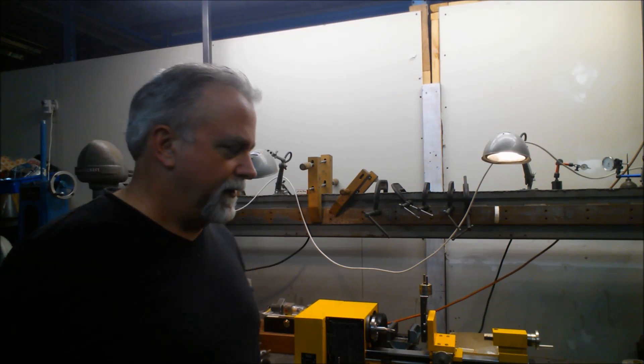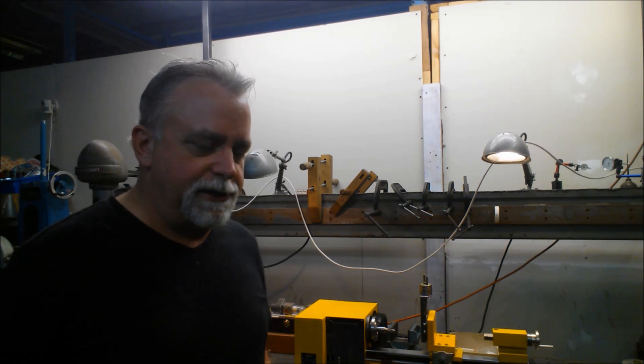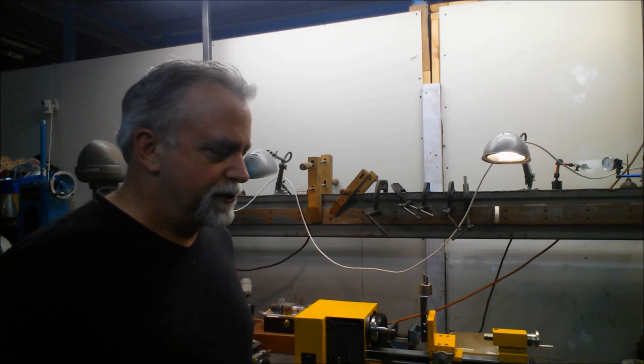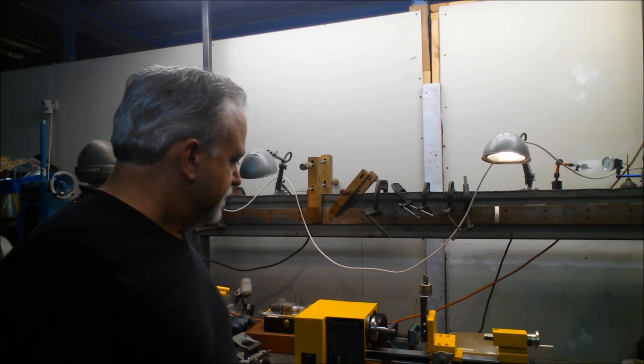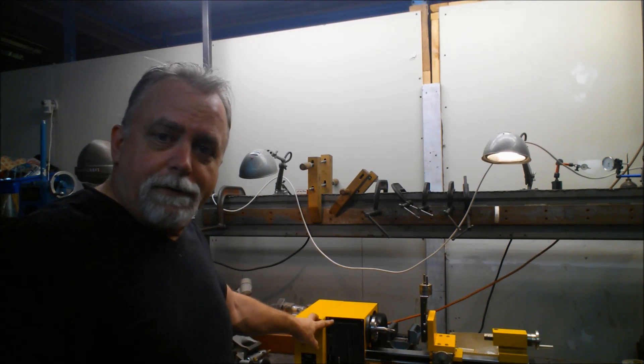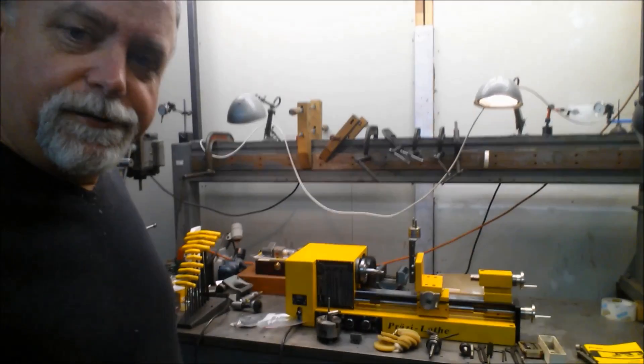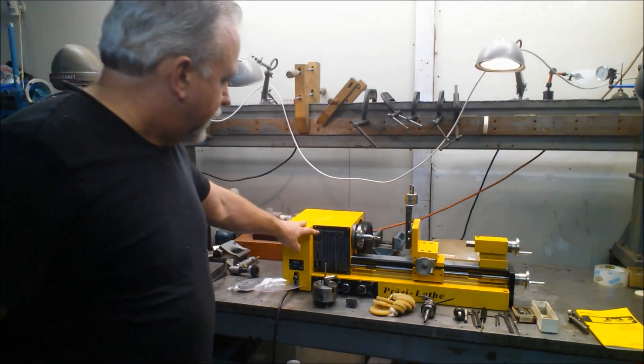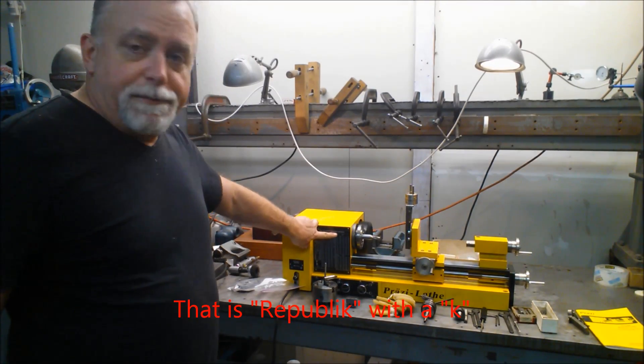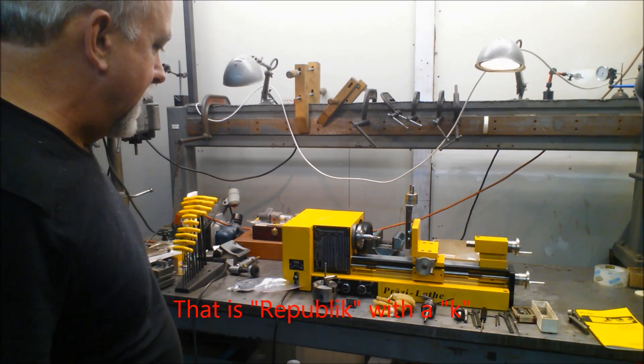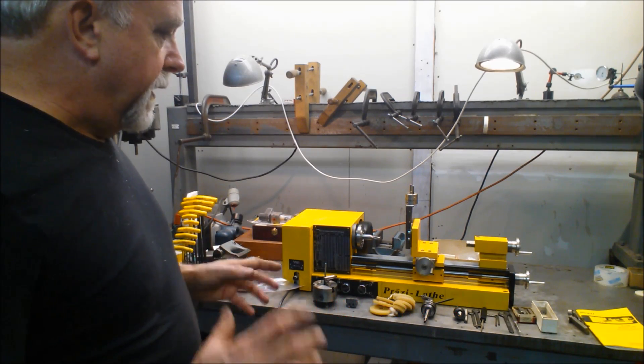It's a Prozzi lathe, a nice little lathe that's actually made in East Germany. It's got to be a few years old. We're going to look at it here. I guess we should zoom in. It says made in German Democratic Republic, so we know it's East German.